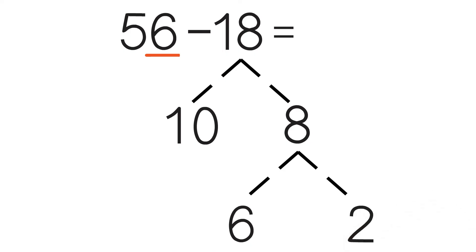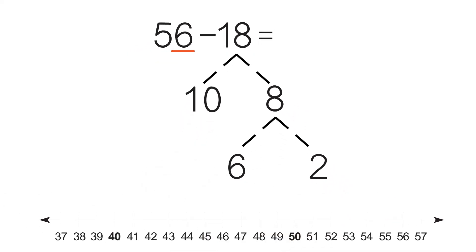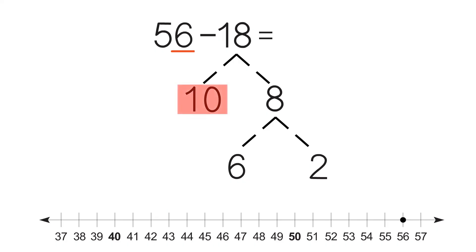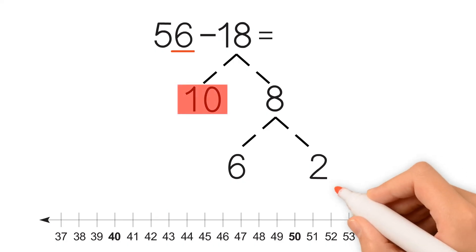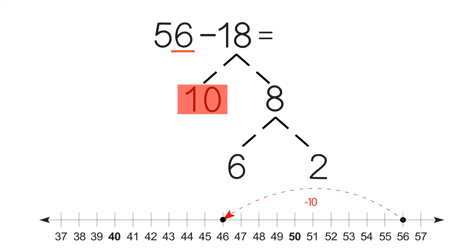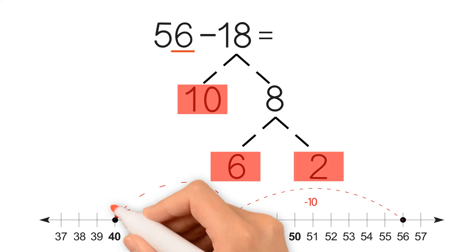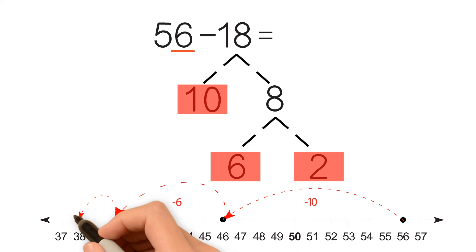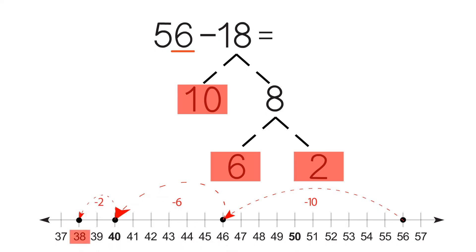Then we take our number line and we mark 56. Then we subtract 10, which is our first number, from 56. 56 minus 10 equals 46. Then we take our second number, which is 6, and we subtract it from 46. We get 40. To finish the problem, we subtract our last number, 2. 40 minus 2 equals 38. Our final answer is 38. 56 minus 18 equals 38.